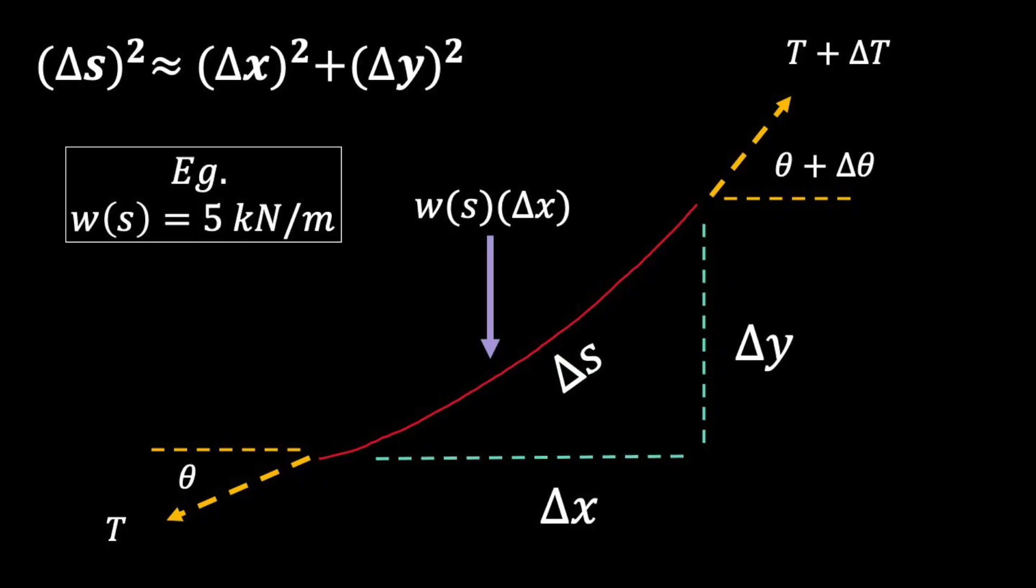Cables under self-weight are like cables under distributed loads. To derive our statics relationships, we would again look at the equilibrium of a small segment. The biggest difference is that we want to use s, the cable length. That's because our loading function makes much more sense as a function of s than x, because it's the weight of the cable per unit length.